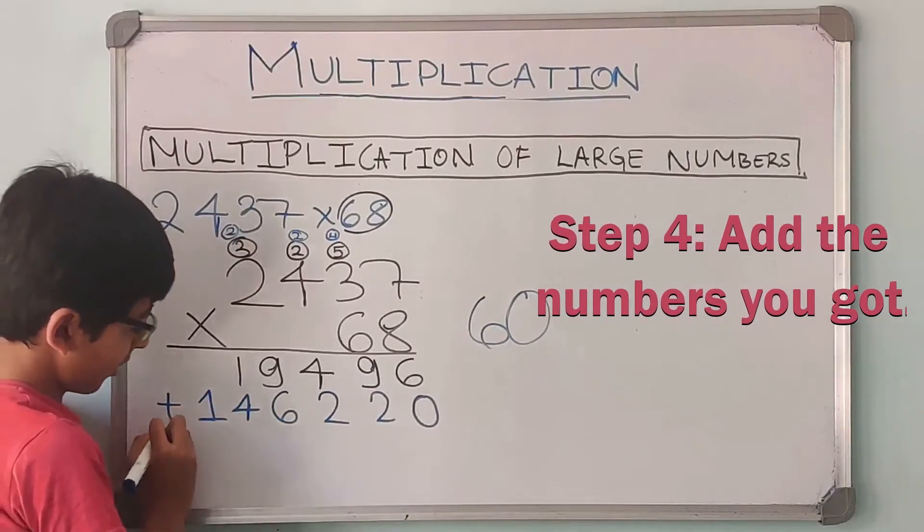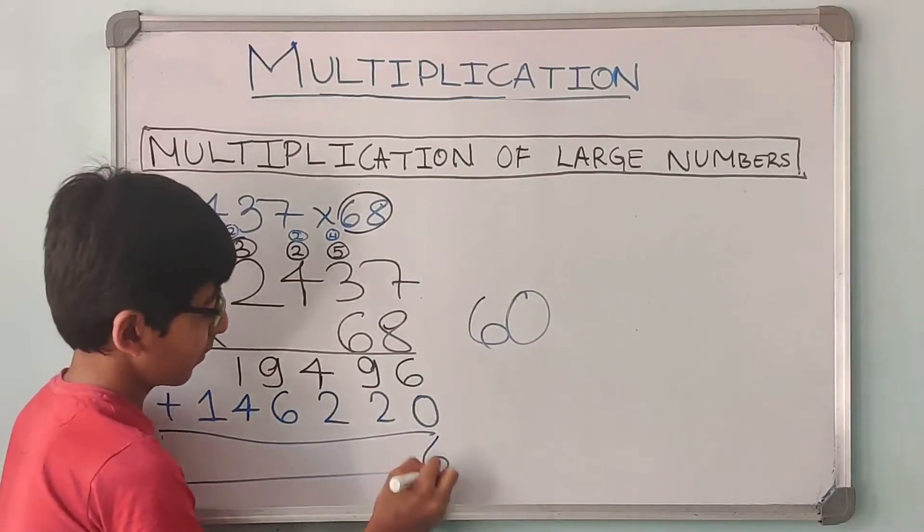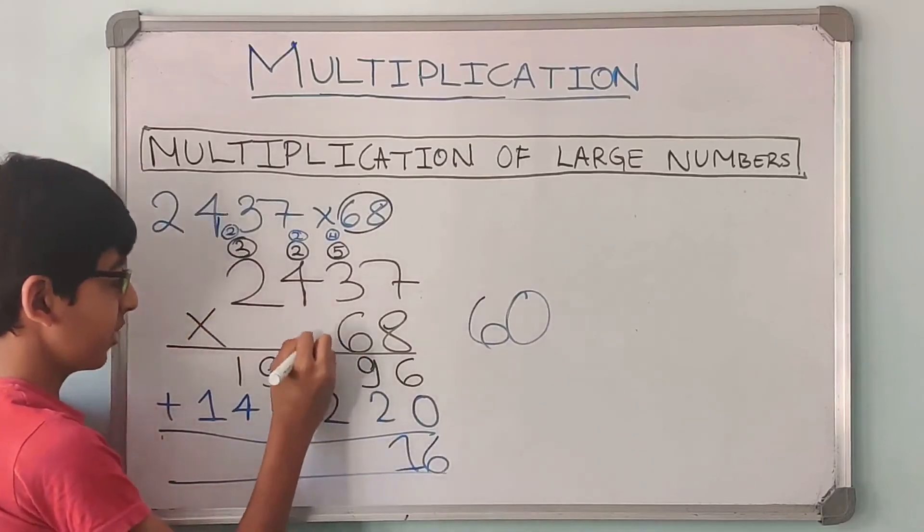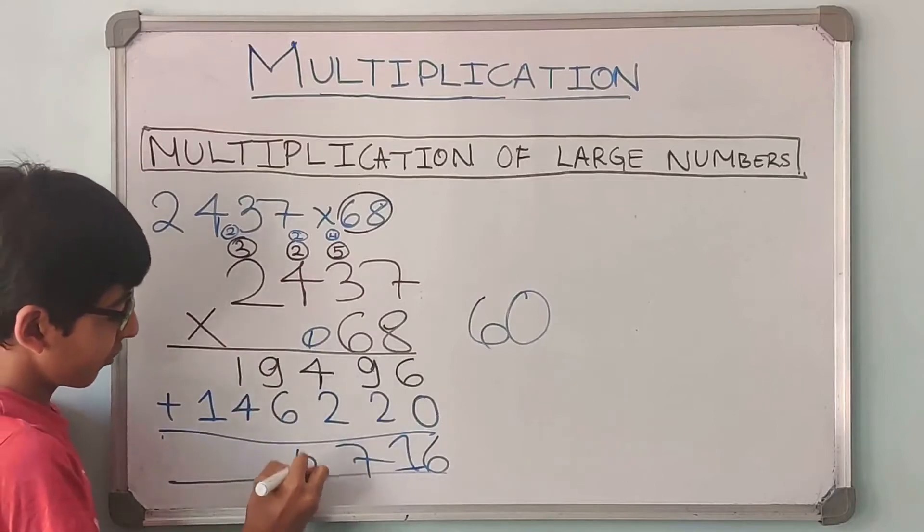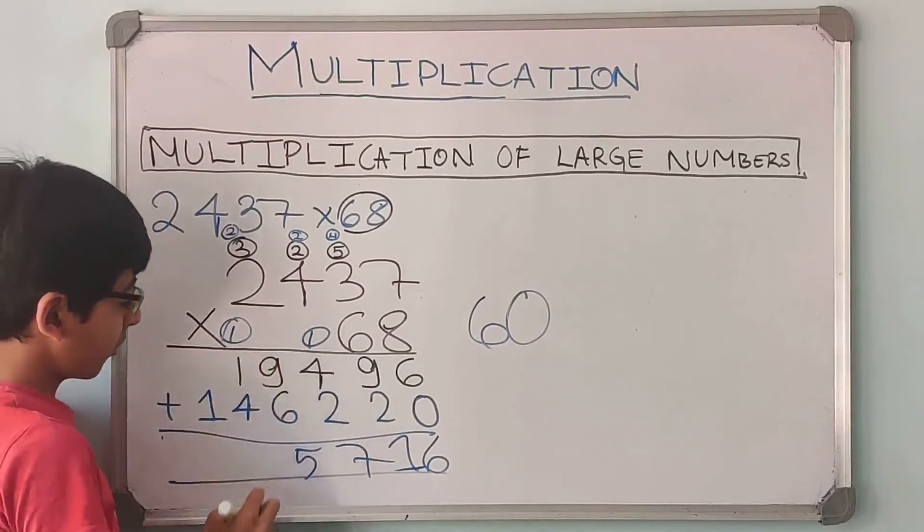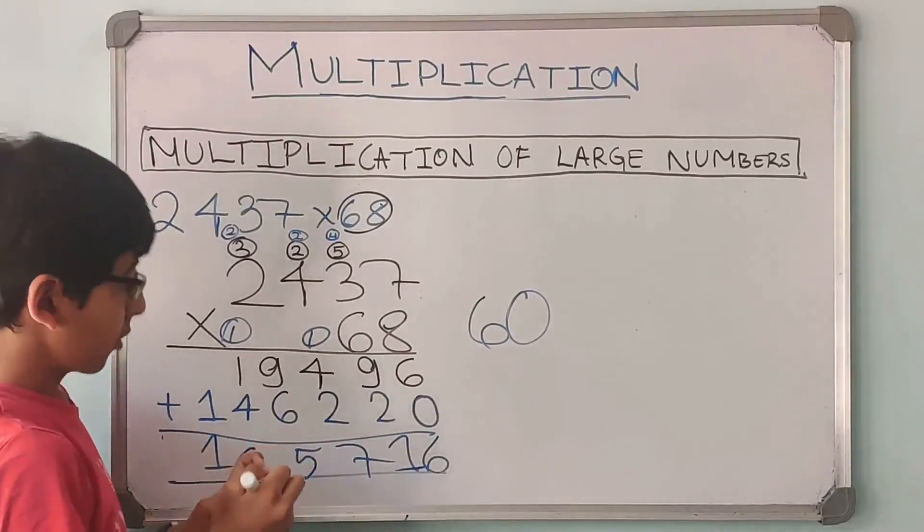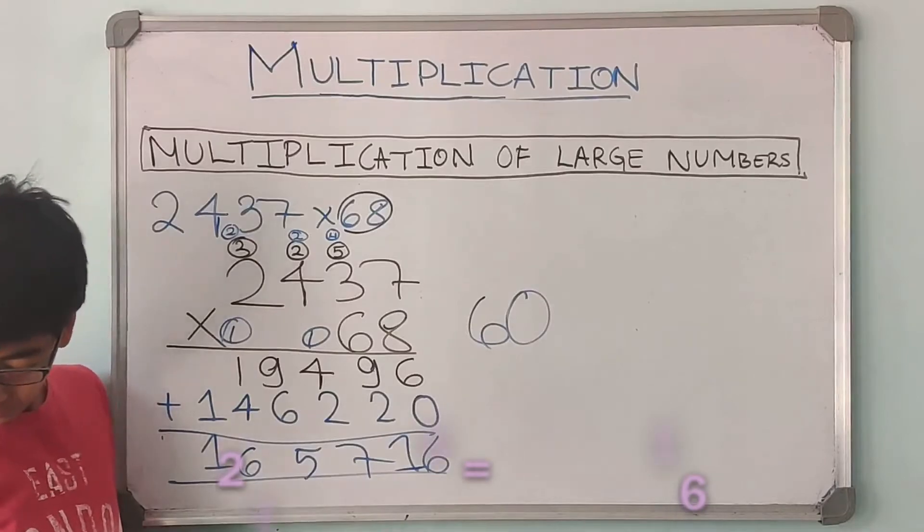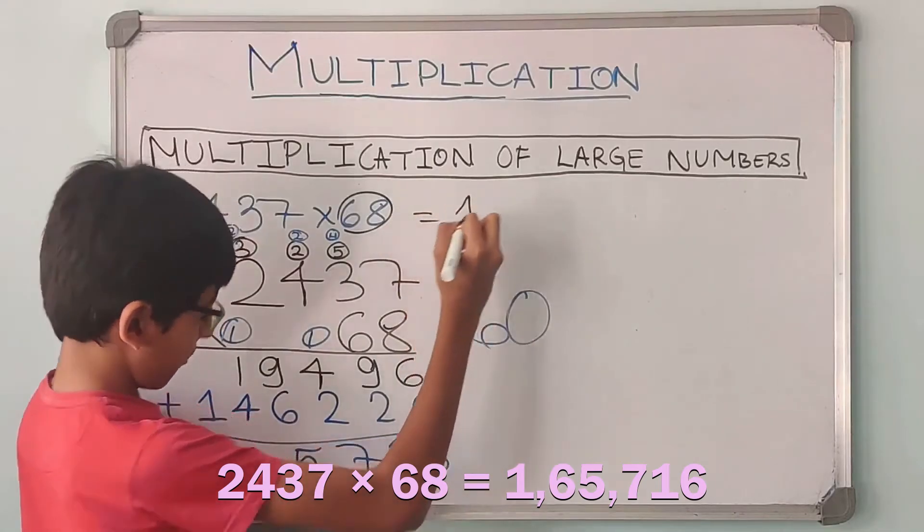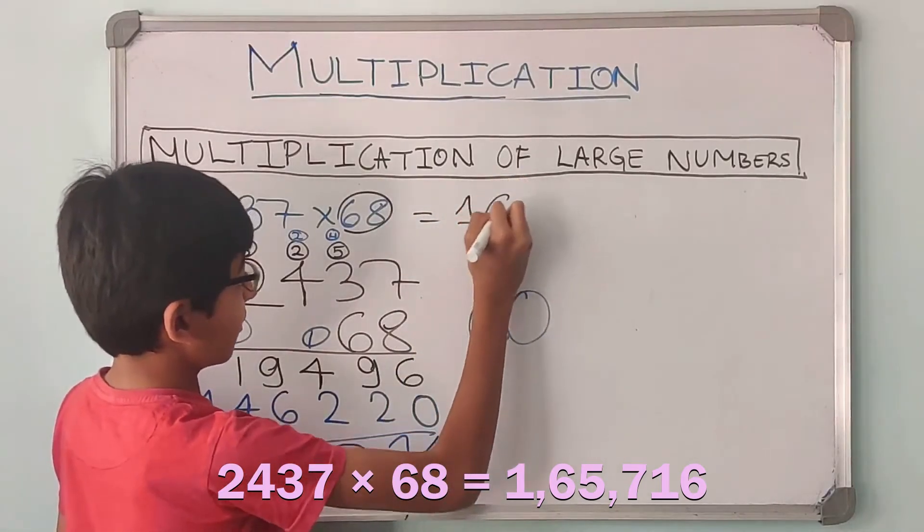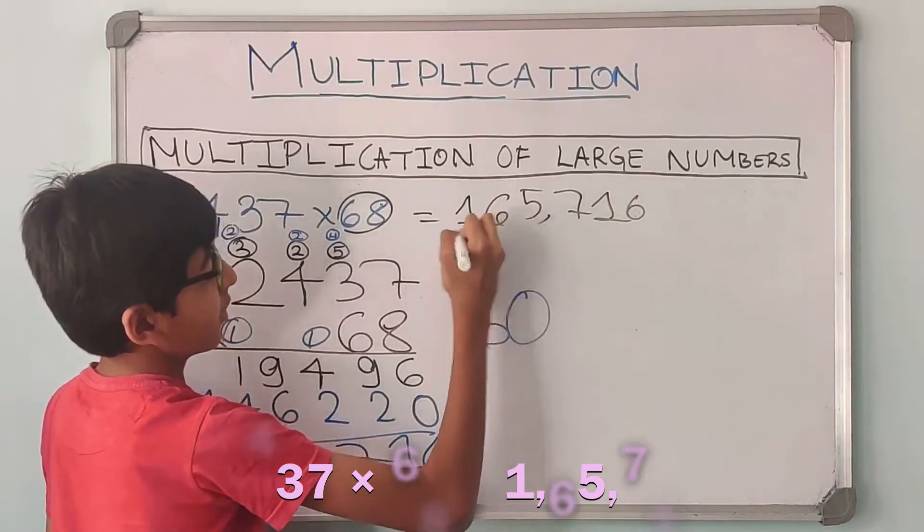Now we have to add them. So like this we get to know that 6 plus 0, 6. 9 plus 2, 11. 1 carry 4. 1 plus 4, 5, plus 2, 7. 9 plus 6, 15. 5 down, 1 carry forward. 1 plus 1, 2 plus 4, 6. 6 and then 1. So 2,437 plus 68 is equal to 1,65,716. You can put the commas also.